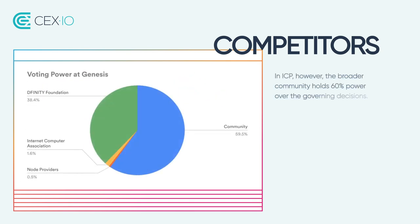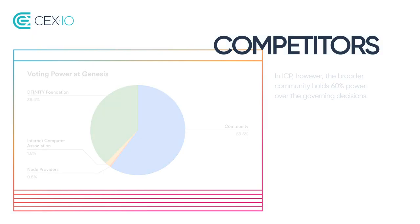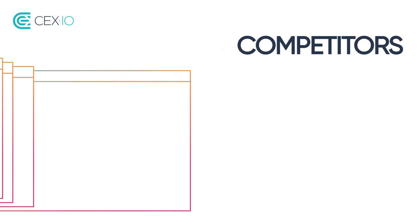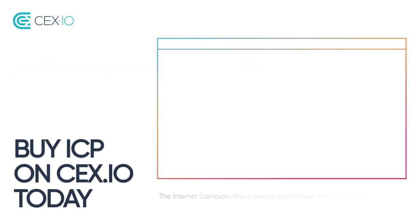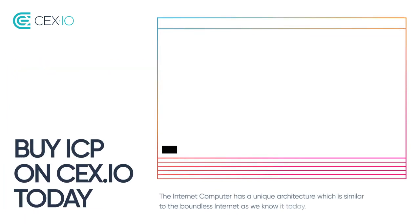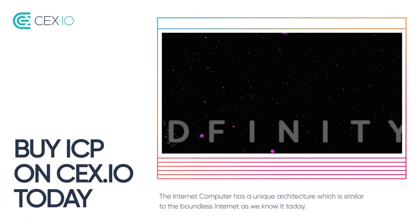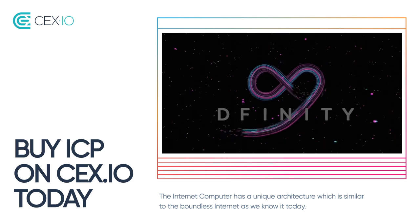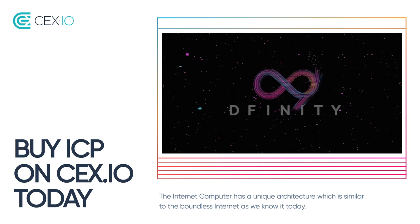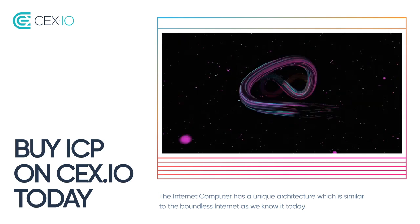In ICP, however, the broader community holds 60% power over the governing decisions. The Internet Computer has a unique architecture, which is similar to the boundless Internet as we know it today.